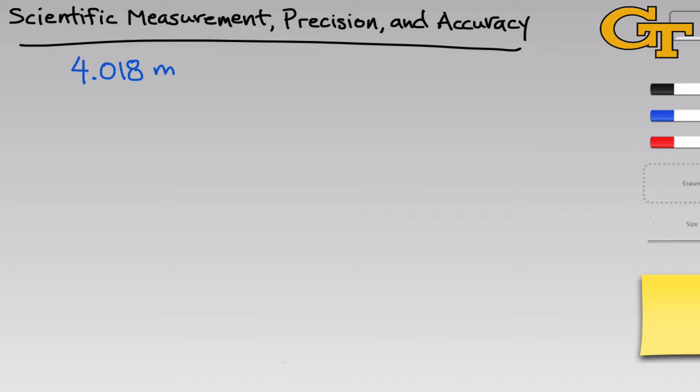Let's begin discussing scientific measurements. So I've written up here a simple scientific measurement, 4.018m, where m stands for meters. We can break this down into two components that are shared by all scientific measurements. The first is the number itself. We'll call this the value of the measurement.